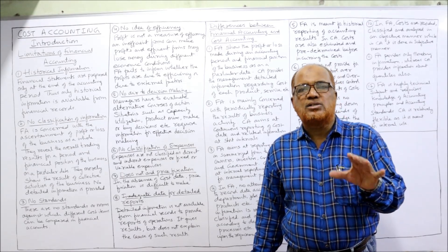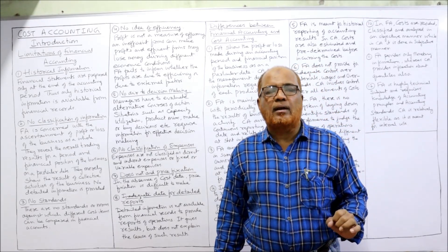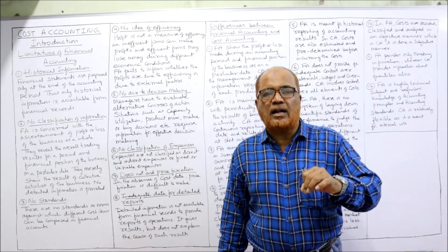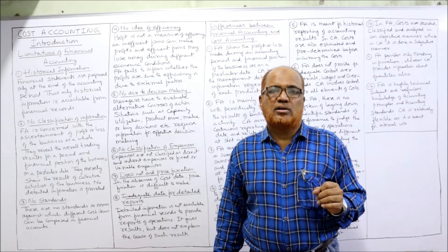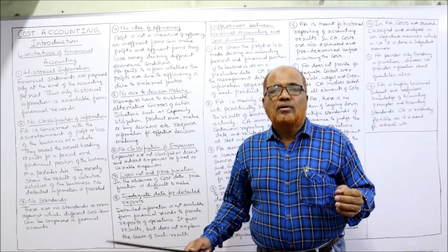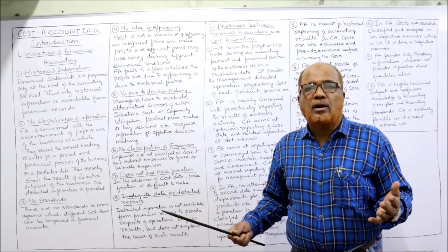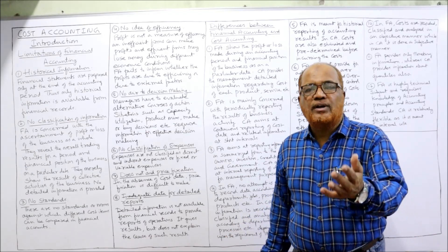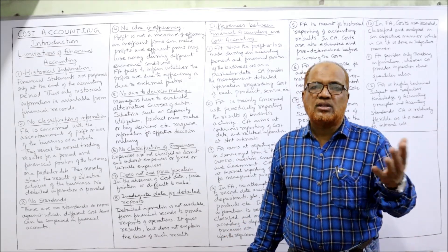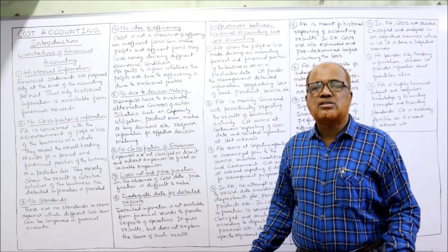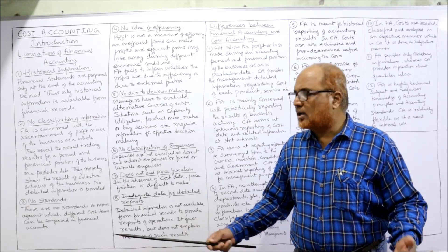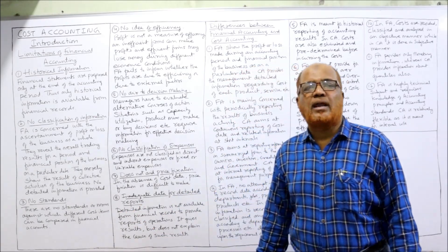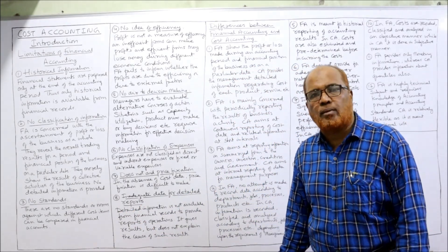The third limitation is no standards. There are no norms or standards through which we can compare whether whatever we planned is being achieved or not. We cannot control because we don't have plans first — we wait for the transaction, then write it down. It is just like historical costing — no standard is available to compare actual performance with planned performance.